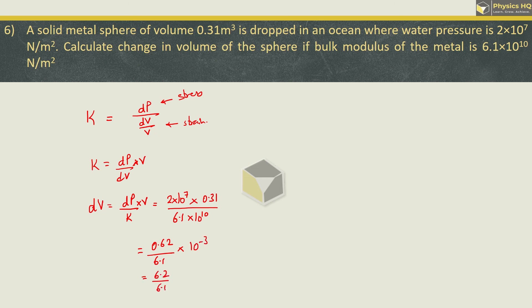So we are left with 10 raised to minus 3. We can write this as 6.2 upon 6.1, here it will be 10 raised to minus 4. So this is approximately 1 into 10 raised to minus 4 meter cube. This is the change in volume. Hope you all understood this.